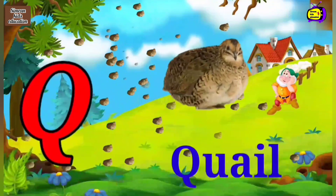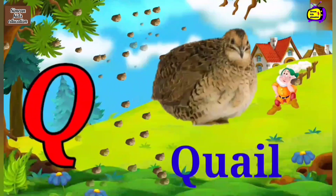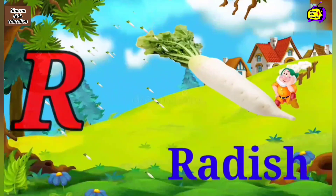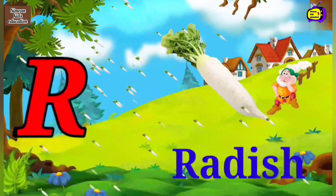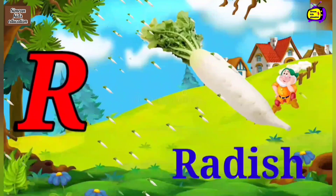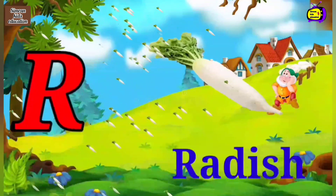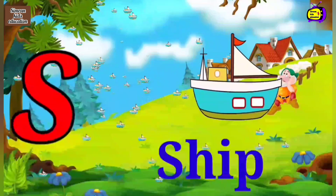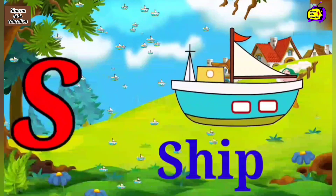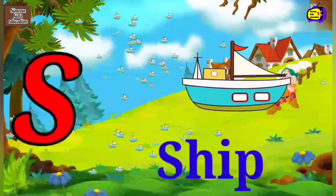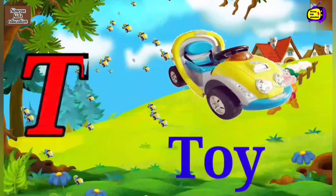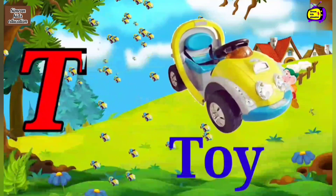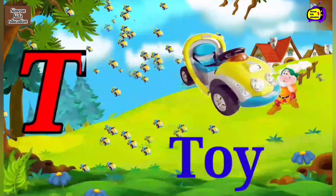Q for Quill, Quill means butter. R for Reddish, Reddish means muli. S for Ship, Ship means jahaj. T for Twai, Twai means khilona.